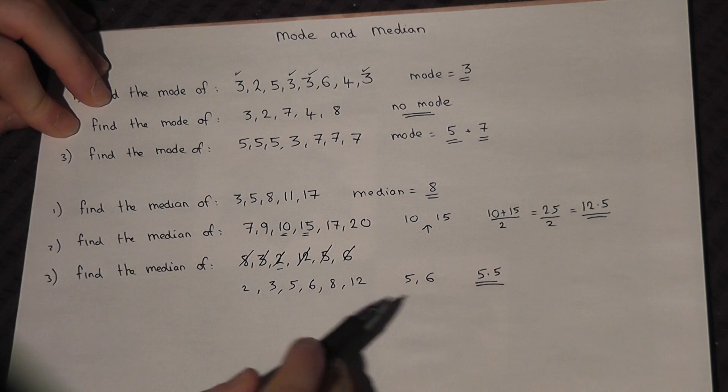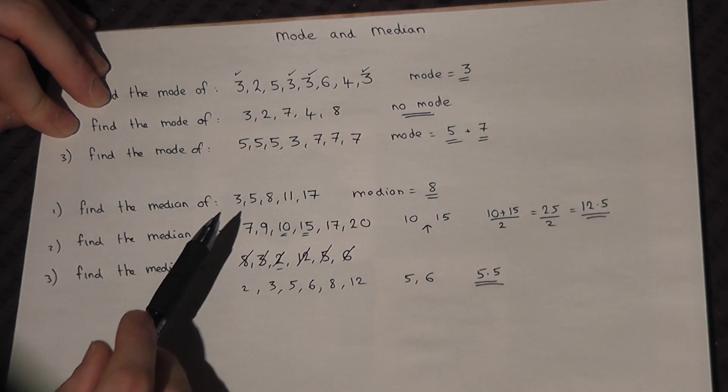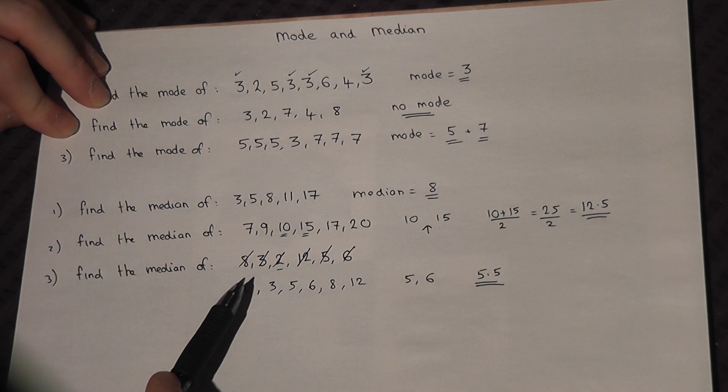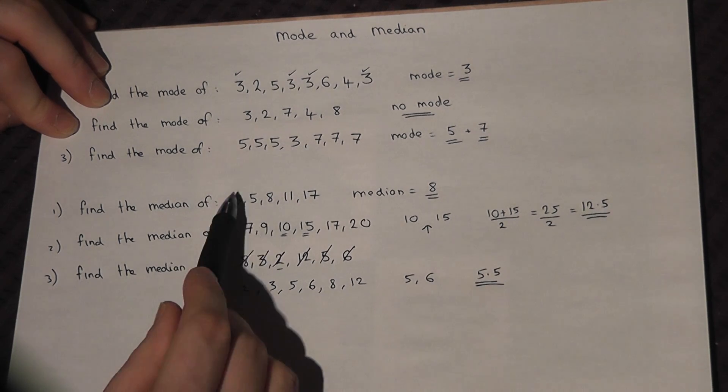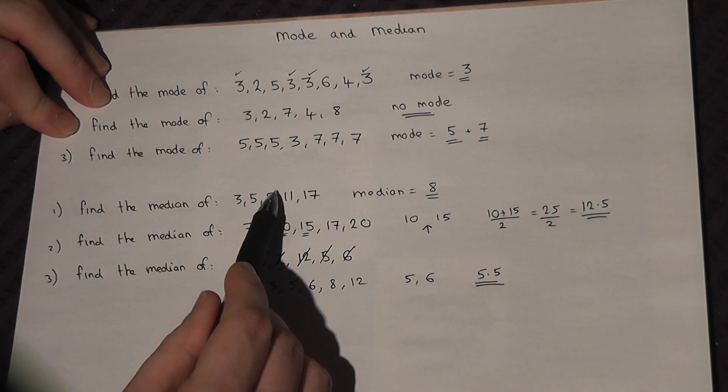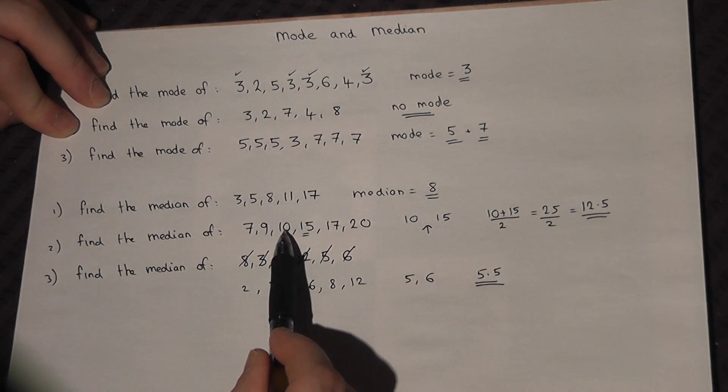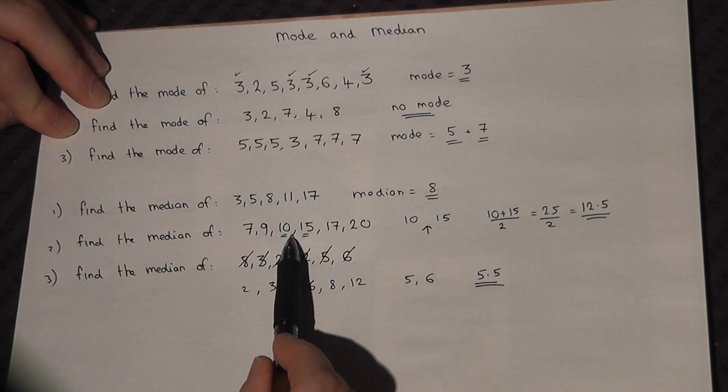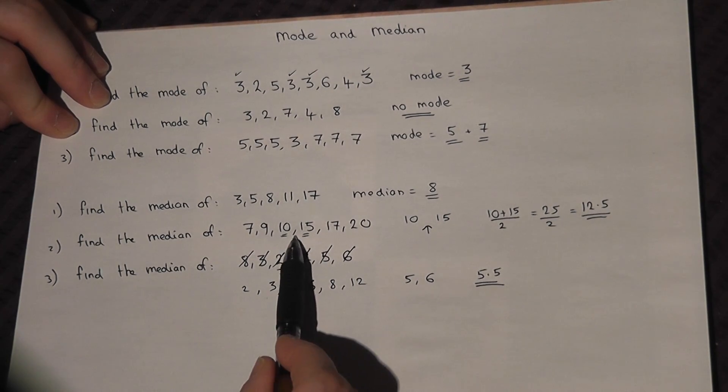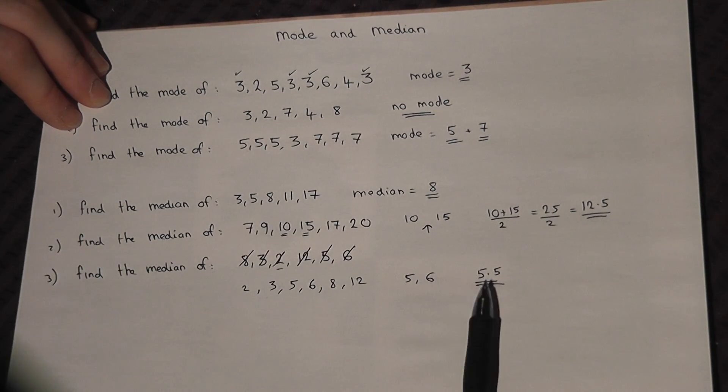So the mode is the most frequent number. The median is the number in the centre. When there's an odd number of numbers, there's always an exact median. When there's an even number of numbers, there are two central numbers, and you find the midpoint halfway between those two numbers, like 12.5 or 5.5.